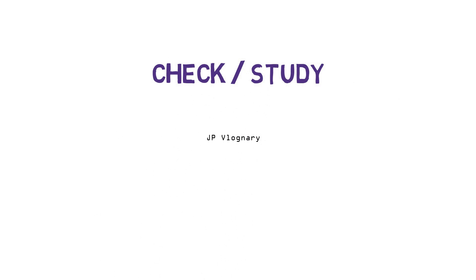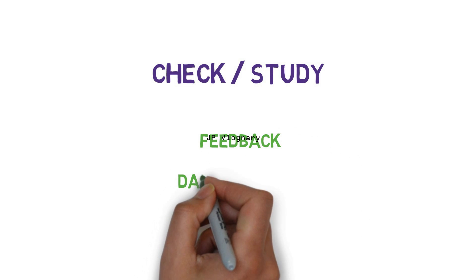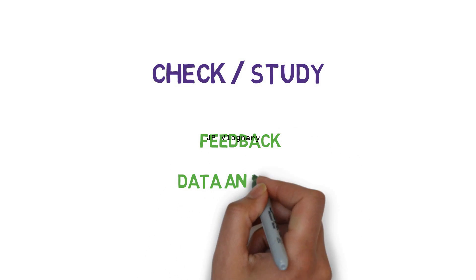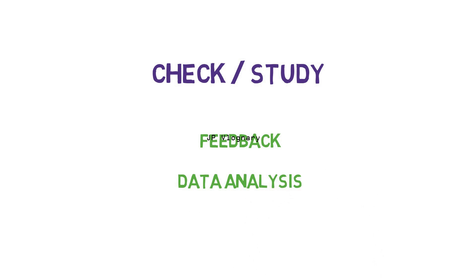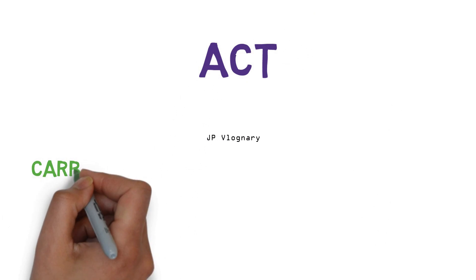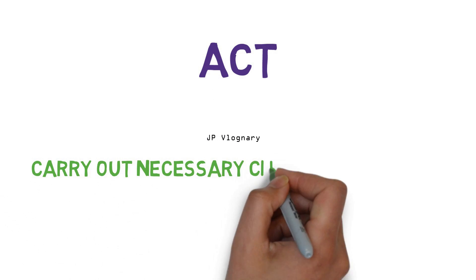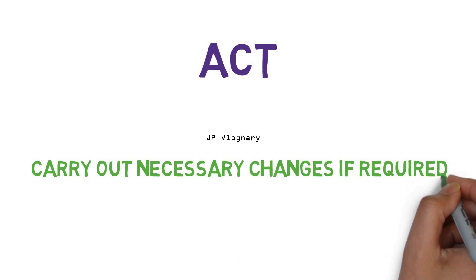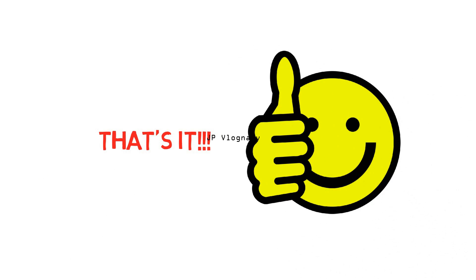After implementing and successfully running the plans, it is necessary to obtain feedback and analyze the results of the performance. The fourth phase is Act — carry out the necessary changes that are required in the cycle. That's it for this video.